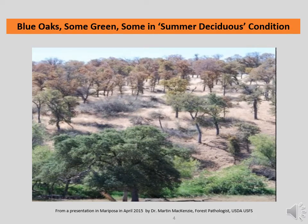This image was part of a workshop presentation on drought and bark beetles given in 2015 in Mariposa by Dr. Martin McKenzie, forest pathologist with the United States Forest Service. What you see in the background and mid-ground is a stand of blue oaks that have gone summer deciduous because of a shortage of groundwater. What you see in the foreground is a stand of blue oaks that have accessed sufficient groundwater to stay green. The difference in condition is because the green trees in the foreground are in a depression in the ground and their root systems were able to reach groundwater. The summer deciduous trees on higher ground are simply too far above groundwater to get a sufficient amount of it and are turning brown and shedding their leaves early as a survival mechanism.